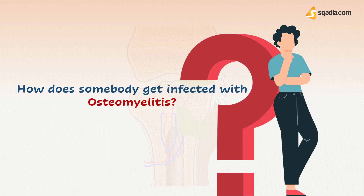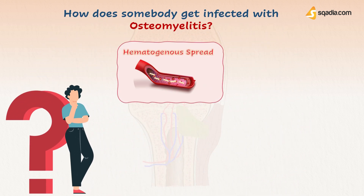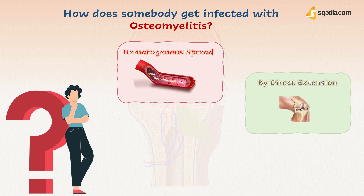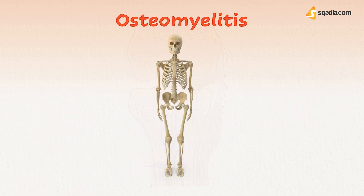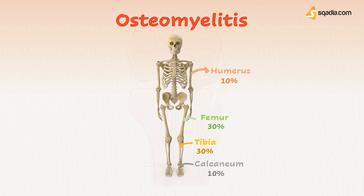The various ways a bone can be infected include hematogenous spread, which is a causative organism being introduced into the body, carried into the bloodstream, and the infection reaching the bone; direct extension from an infected joint, skin, or soft tissue; and lastly, an infection that usually follows trauma of some sort, which includes surgery or instrumentation. A rough distribution of osteomyelitis includes 30% affecting the femur and tibia, 10% affecting the humerus and calcaneum, and 5% affecting the fibula.